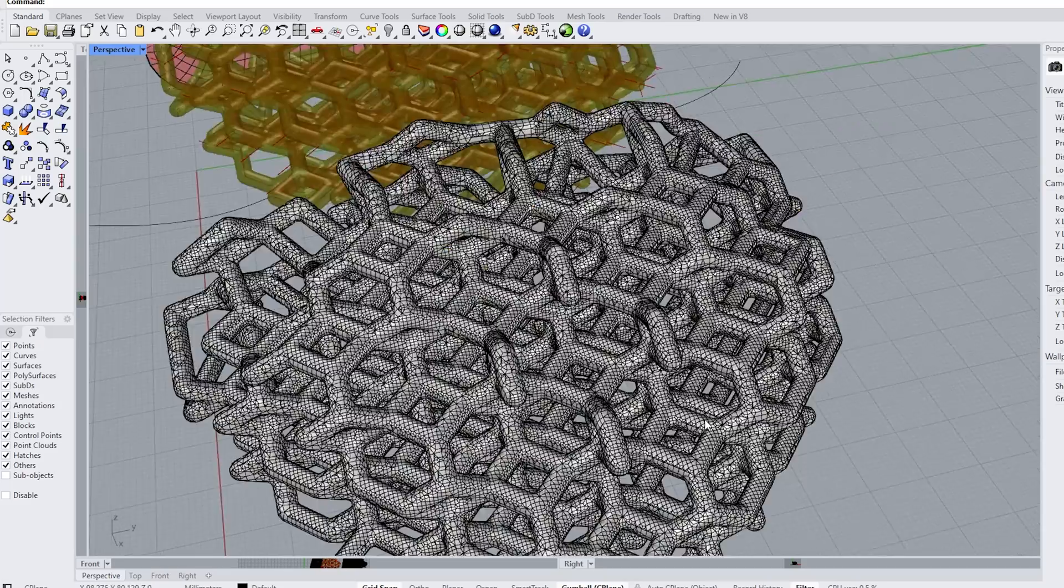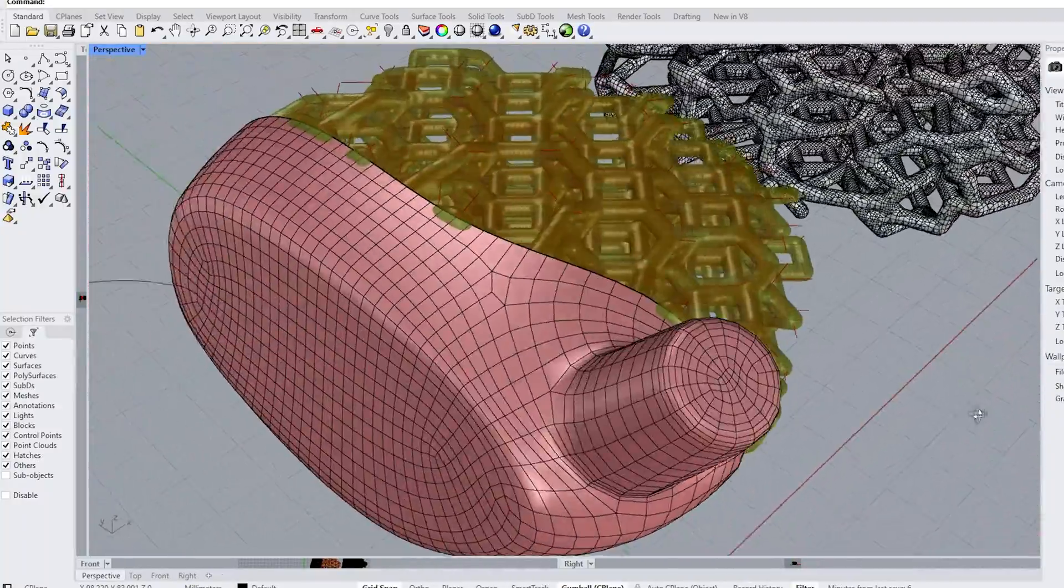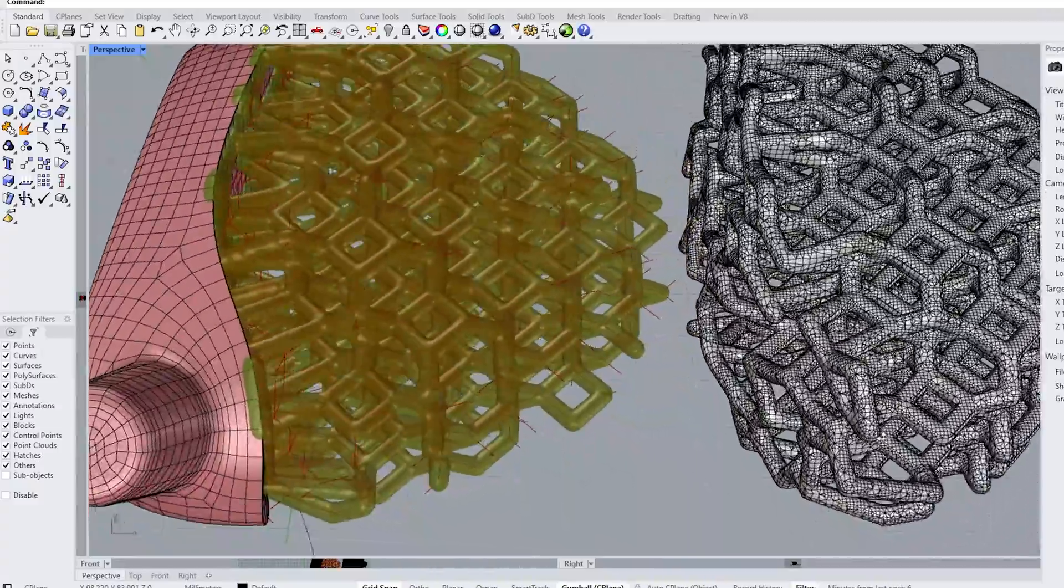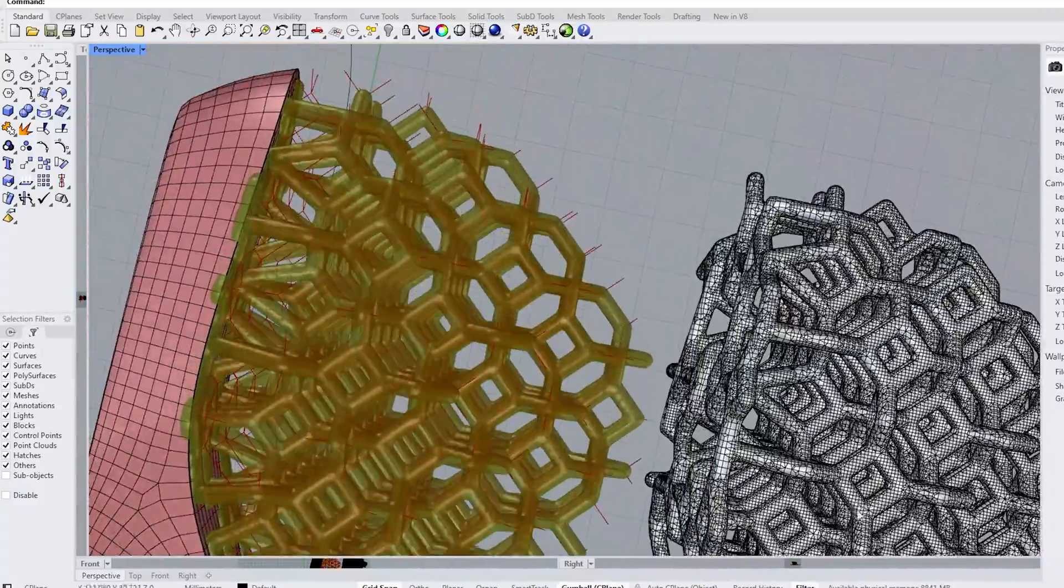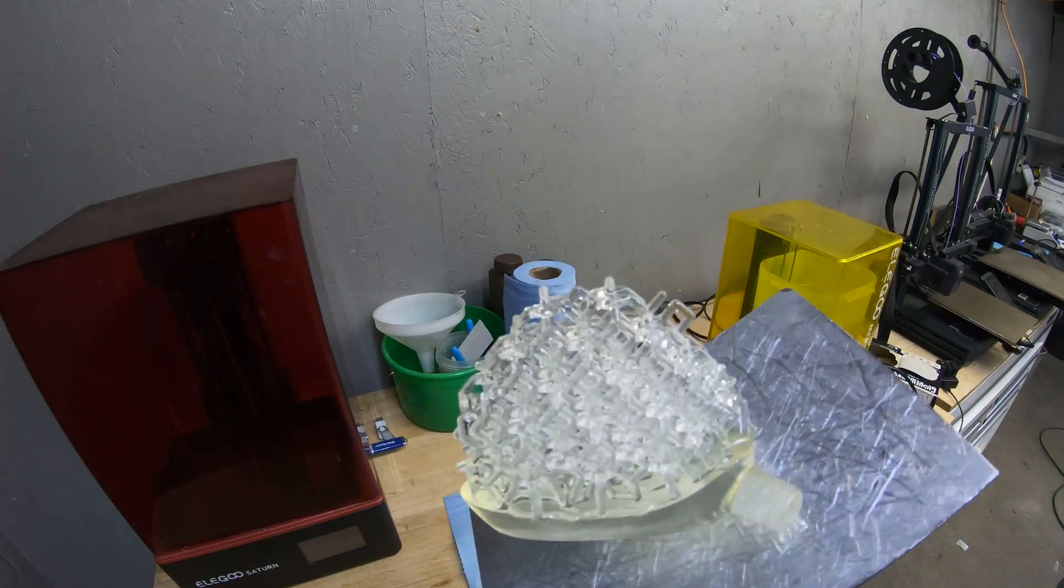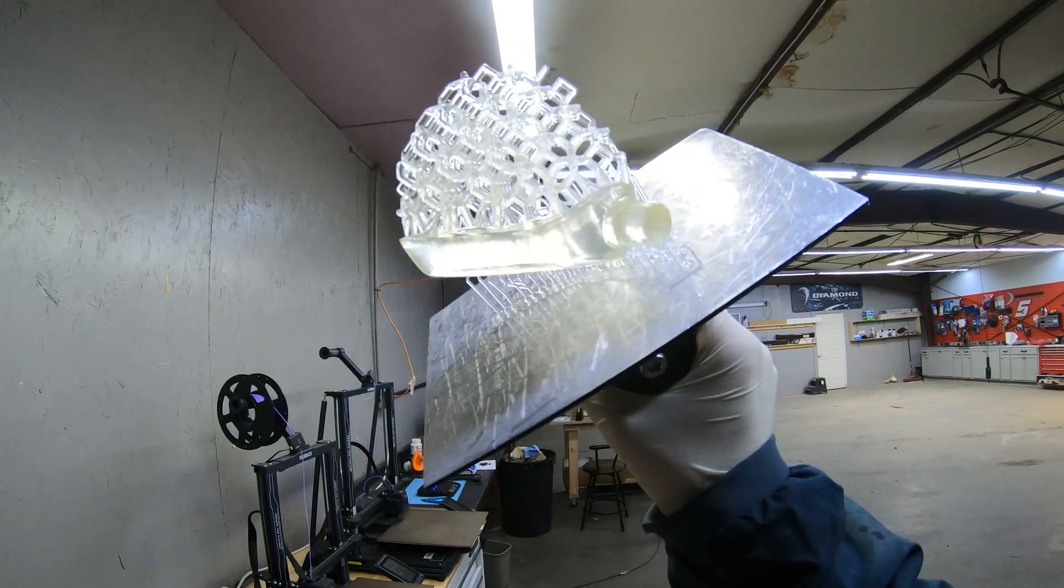Next, I had to learn this new software called Rhino, which was a pain in the ass, but it's good for creating lattices and stuff like that. I wanted the driver to have a lattice incorporated into it because one of the properties of electroless nickel plating is that it can evenly coat hard to reach areas. And I wanted to test this out to see if that was actually true.